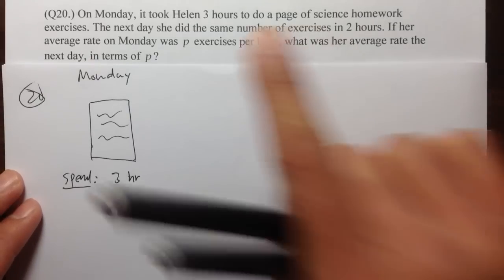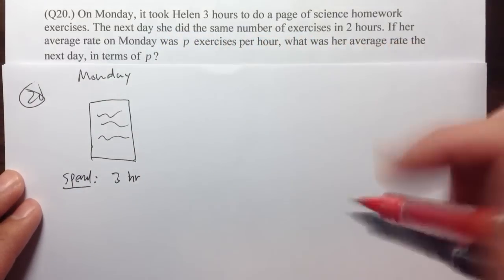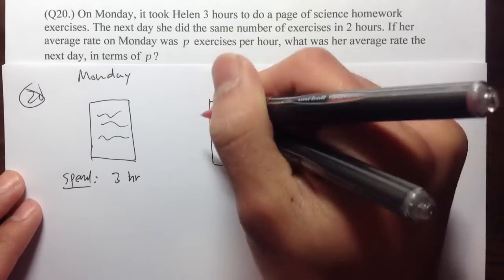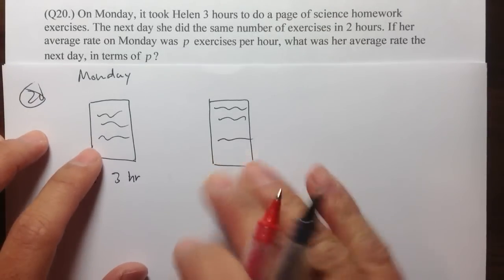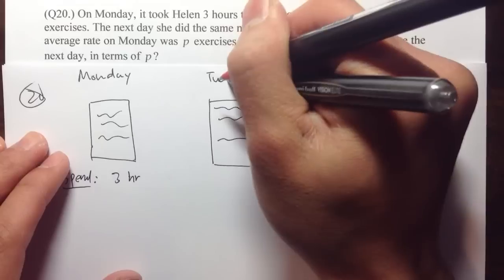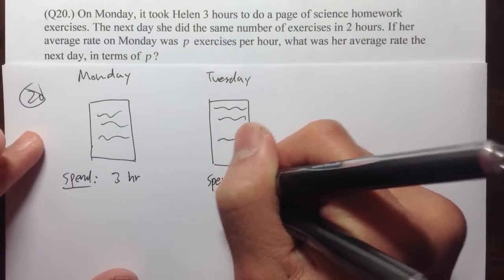And the next day, she did the same number of exercises in two hours only. We can just think about, it's the same amount of questions that she was doing, but on Tuesday, she was doing much faster. She only need two hours to do it.